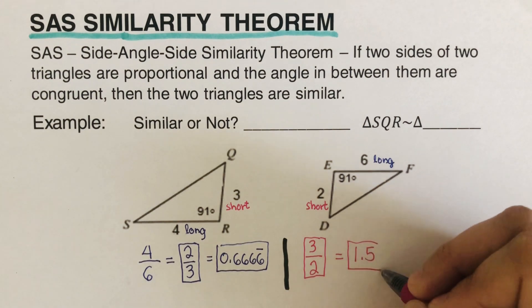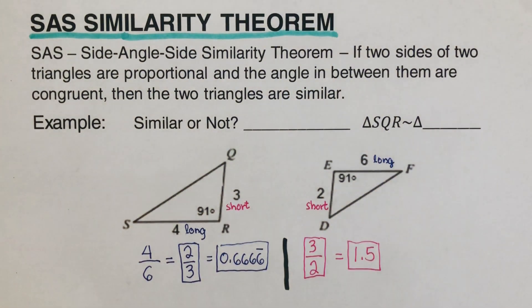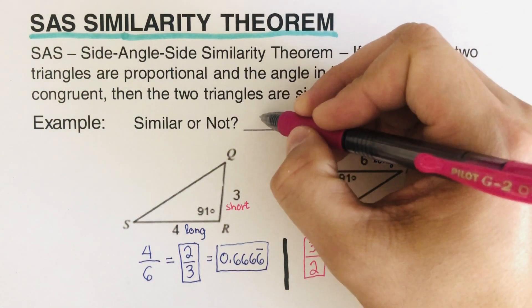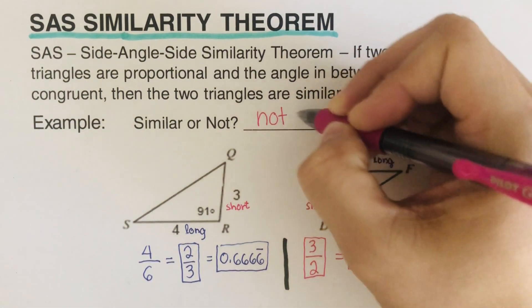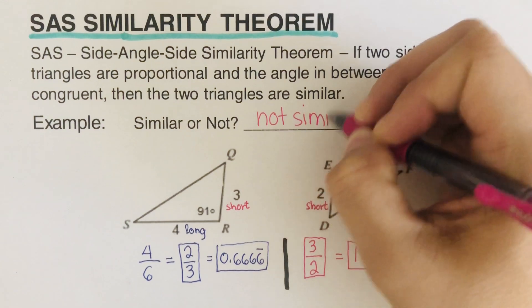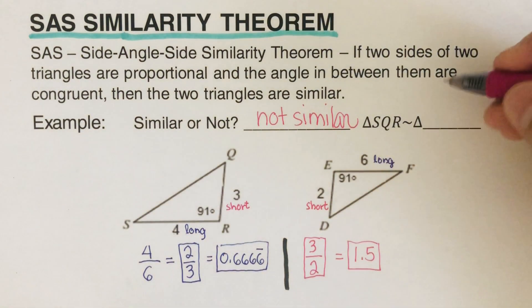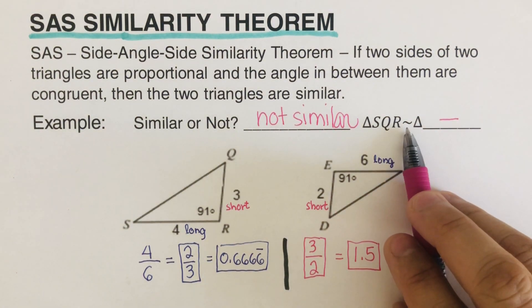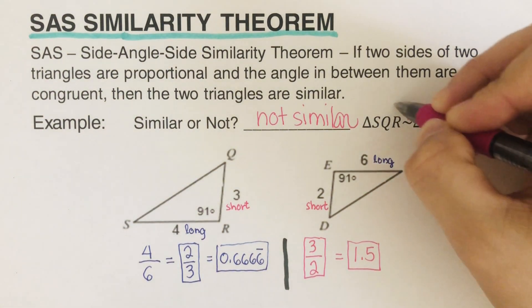So are these two fractions the same? They are not the same. Are these two decimals the same? They are not the same. So if we do this test and they are not the same, we go ahead and say this is not similar. So these triangles here are not similar. And since they are not similar, we leave this blank. This symbol right here is the word similar.